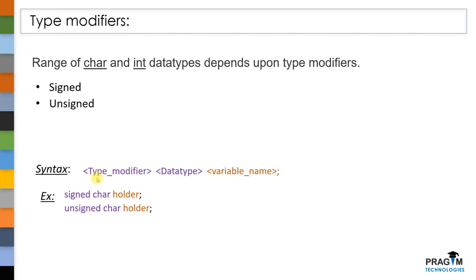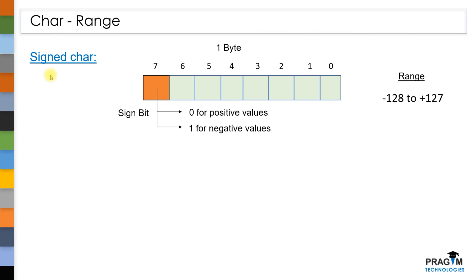The major difference between signed and unsigned type modifiers is: if the variable has a signed type modifier, then it is capable of storing both positive and negative values, because out of 8 bits the most significant bit is particularly reserved to store the sign of the value.